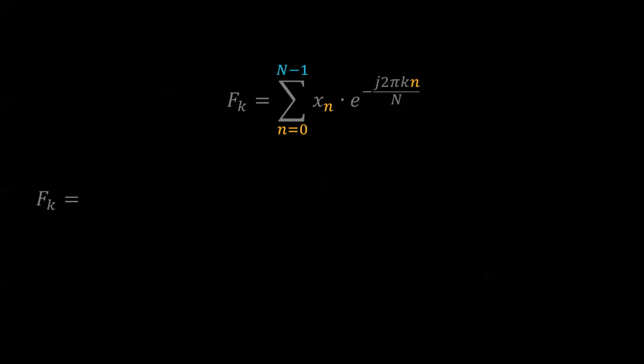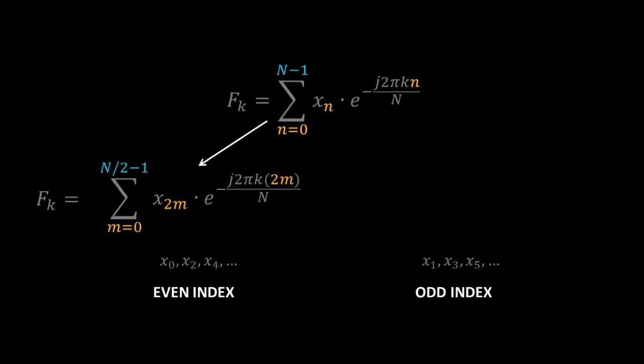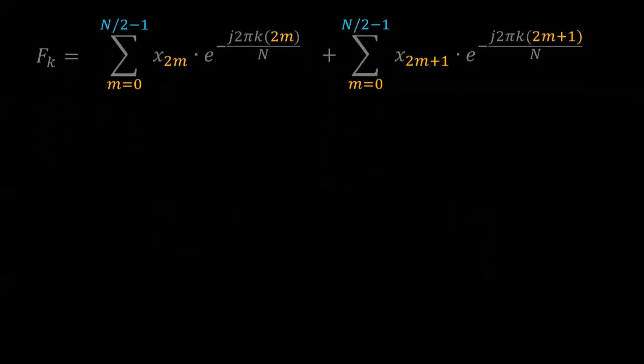The trick to speeding up the DFT is to take advantage of the periodic nature of sinusoids. We can first divide up the DFT into an even index summation and an odd index summation, where the subscripts for the even index sample is 2m, and for the odd index sample is 2m plus 1. So now we have a DFT as the sum of two smaller summations, each half the size of the original.